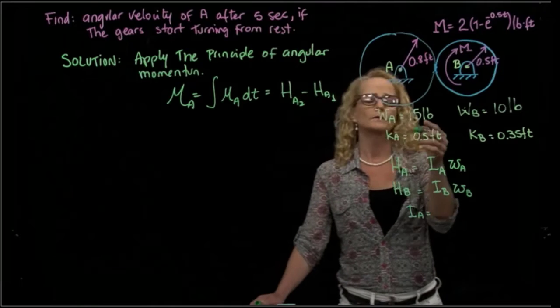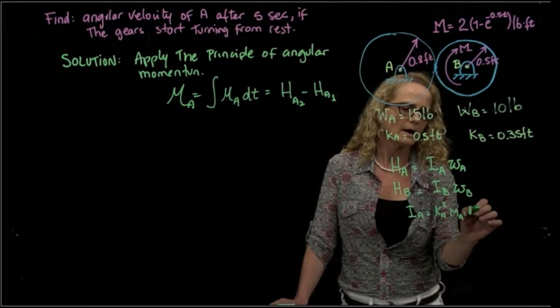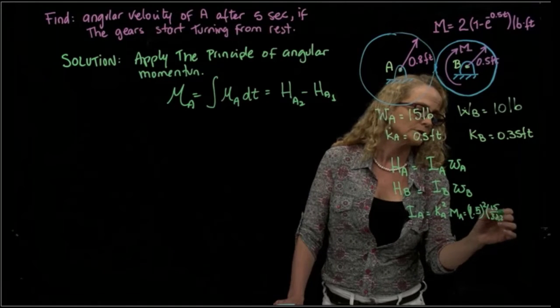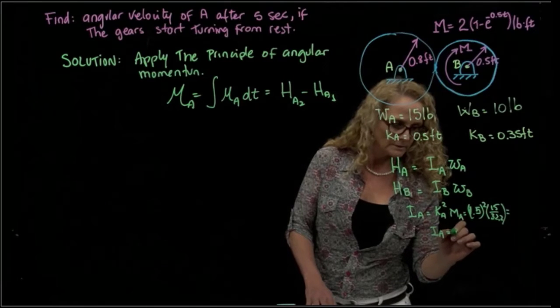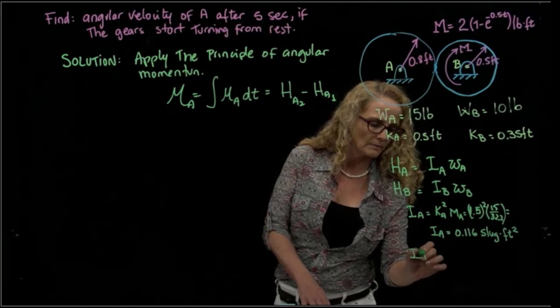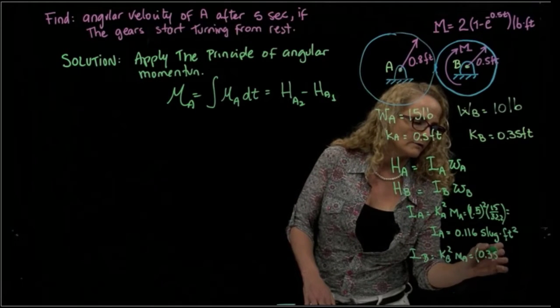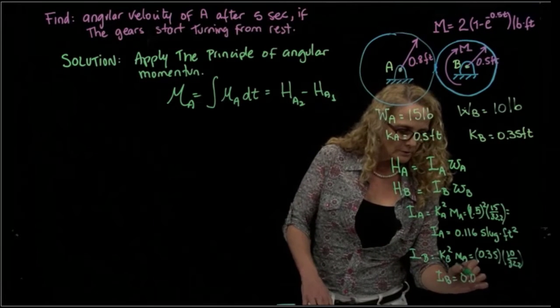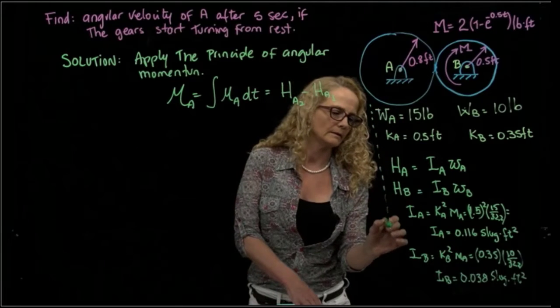As you remember, that will be, by the definition of the radius of gyration, the radius of gyration times the mass of A. So if we calculate that, that will be 0.5 squared. And as you remember, we have the weight and the mass is a derivative unit, which is 15 over 32.2, which is the gravity. And that equals to, I have the result right here, 0.116 slug-feet squared. And the mass moment of inertia of B with the same approach will be 0.35 times 10 over 32.2. And the mass moment of inertia of B will be 0.038 slug-feet squared. So that's the characteristic of our gears.